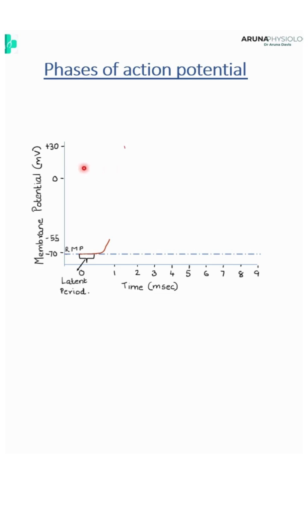Once it reaches this threshold potential of minus 55 millivolt, there will be rapid increase in the potential. This phase is known as the phase of depolarization.